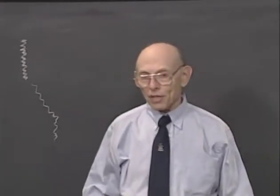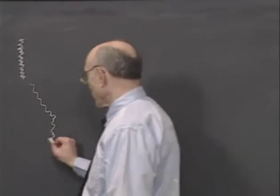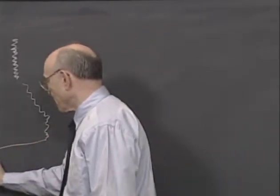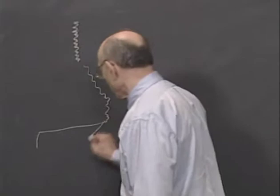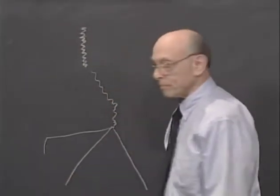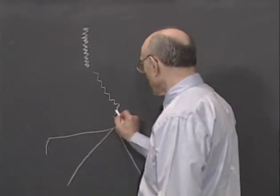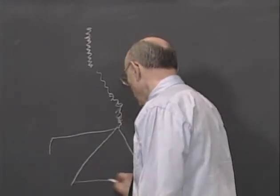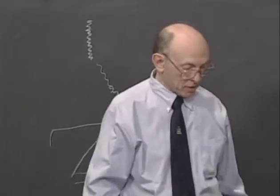What happens with anesthesia? One might think the set point resets downward, but in fact what happens is that the whole thermoregulatory range broadens. Instead of holding temperature tightly, anesthesia broadens the range, and the deeper the anesthesia, the more it broadens.